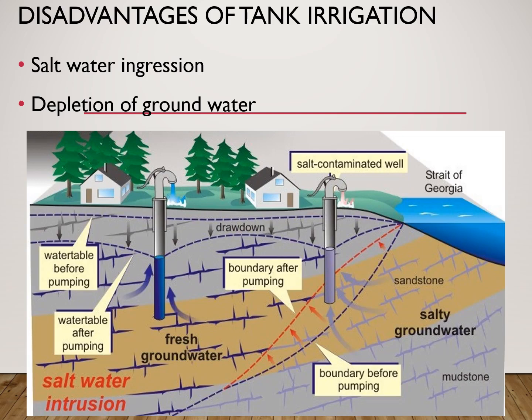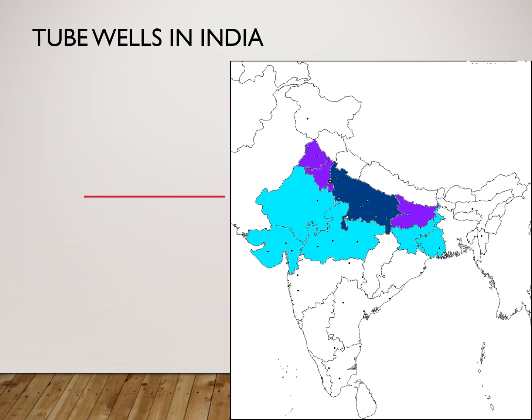Disadvantages of tube well irrigation: if tube wells are dug near coastal areas, salty sea water may enter the ground and make the wells brackish. Excessive use of tube wells may also lower the groundwater table. In India, tube wells are mostly used for irrigation in Uttar Pradesh, Bihar, Punjab, Haryana, and West Bengal, because these are the states through which rivers pass and there is plenty of groundwater available.